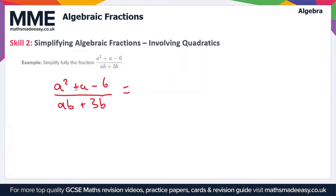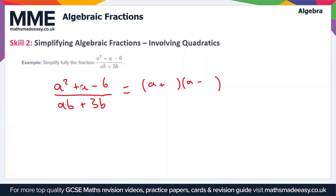Looking at the numerator first, we need a set of double brackets for this quadratic — so it's going to be (a plus something)(a minus something), because a plus times a minus gives a minus. We need a minus number on the end: minus 6. So we need two factors of minus 6 which add together to give plus 1, and those are plus 3 and minus 2.